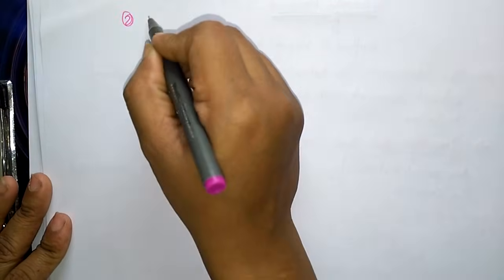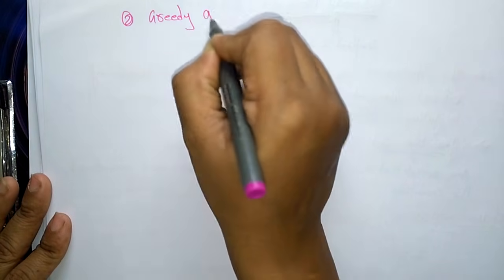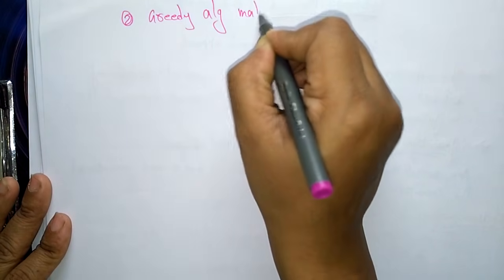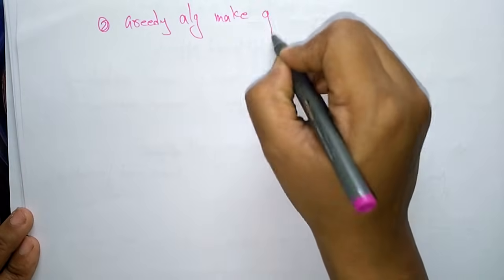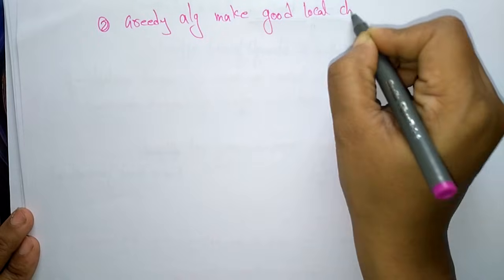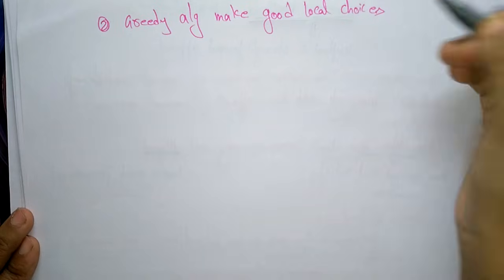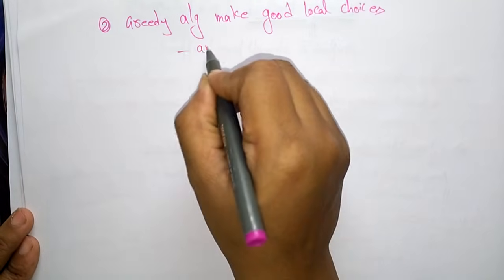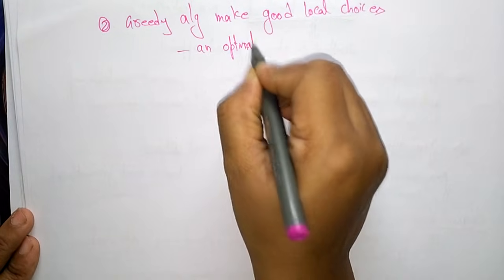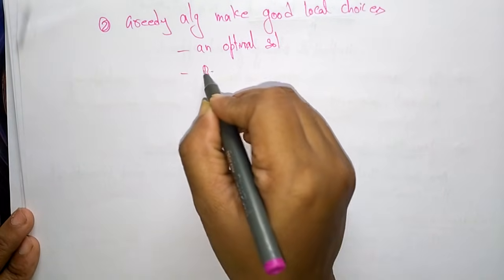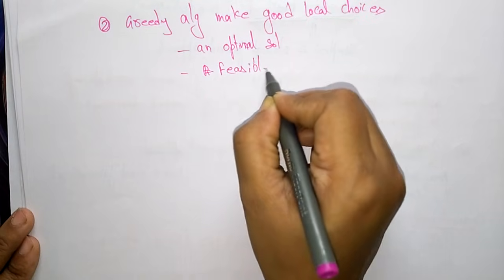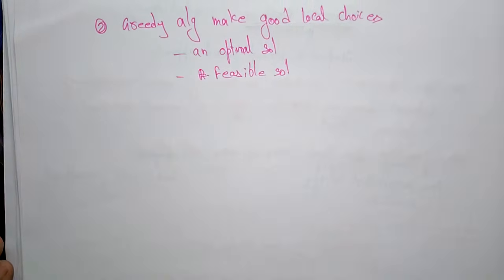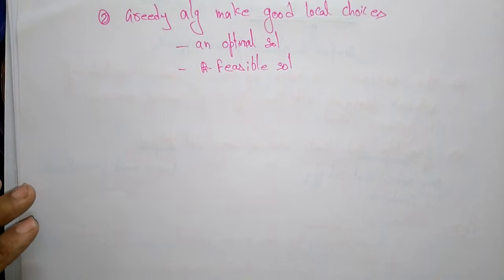The second characteristic is that a greedy algorithm makes good local choices in the hope that these result in an optimal solution or a feasible solution. These are the main features and characteristics of the greedy method.